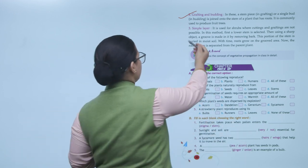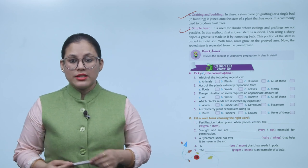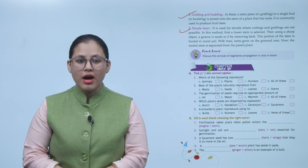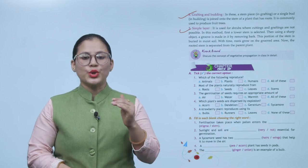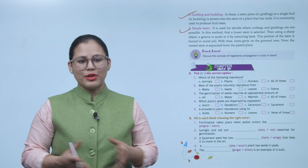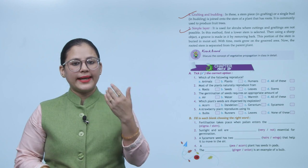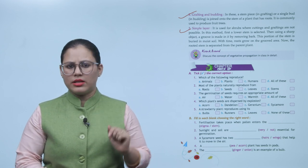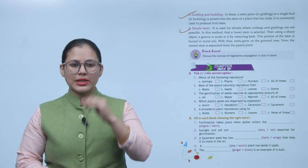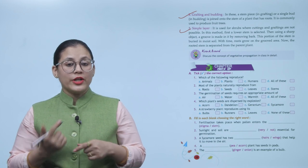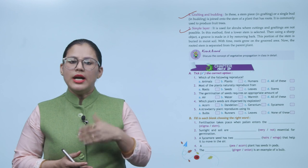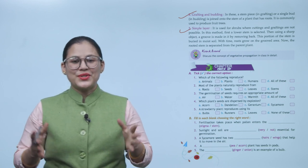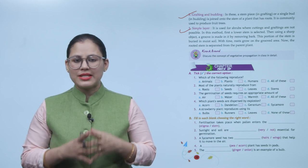Number three: Simple layering. It is used for shrubs where cutting and grafting are not possible. In this method, first a lower stem is selected. Then using a sharp object, a groove is made in it by removing bark. This portion of the stem is buried in moist soil. With time, roots grow on the grooved area. Now the rooted stem is separated from the parent plant. So students, I hope you understood this chapter and the chapter practice questions you will solve yourself.